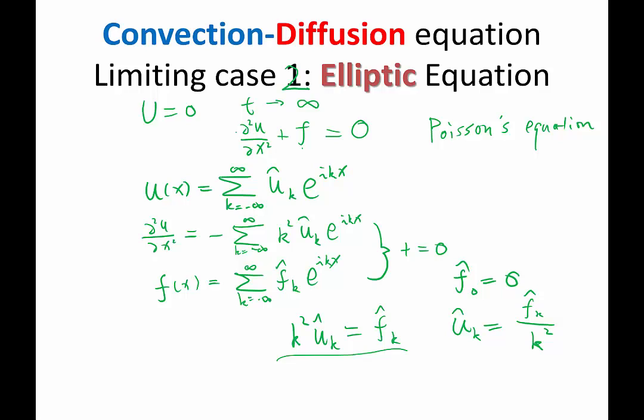Why is there only a steady state solution if f_0 is equal to zero? This is because if f_0 is not equal to zero, for example, if f is equal to 1 as a constant, that means f_0 is equal to 1 and all the other f hats are equal to zero.